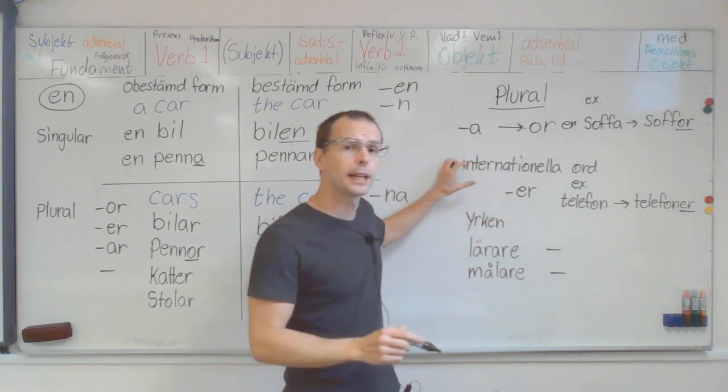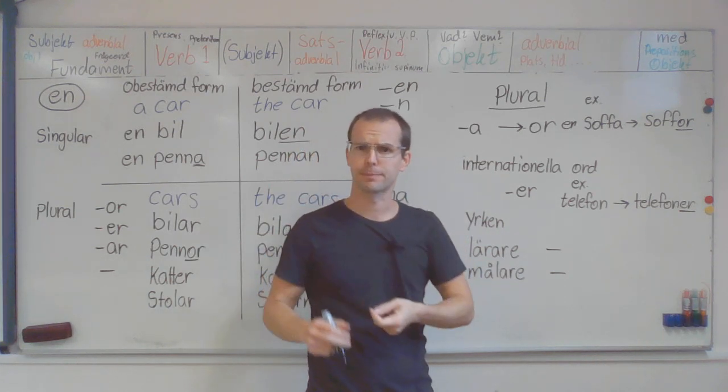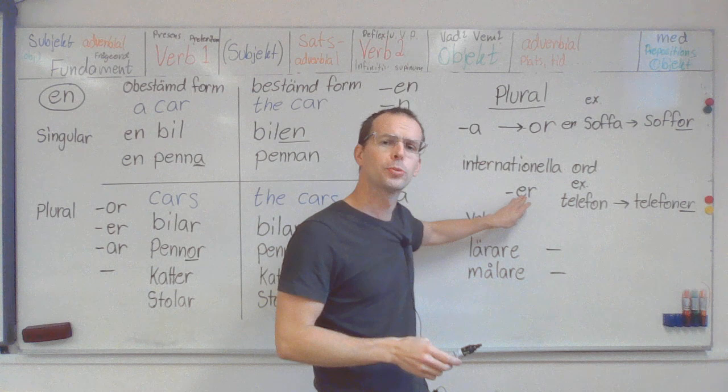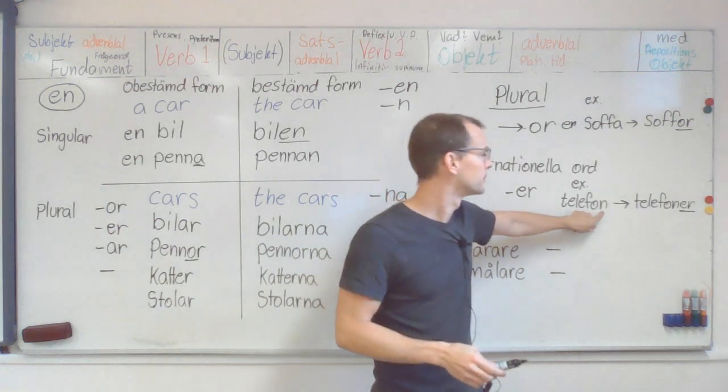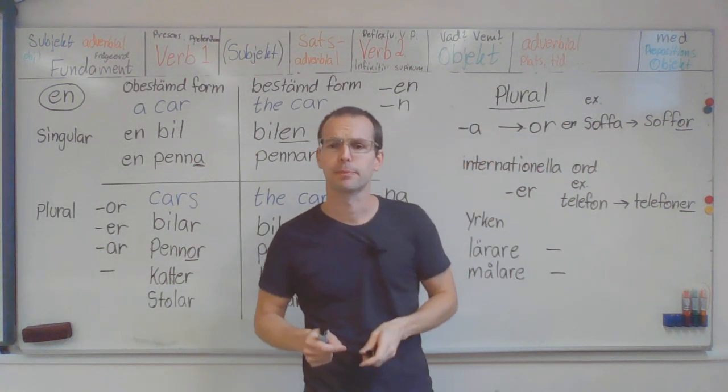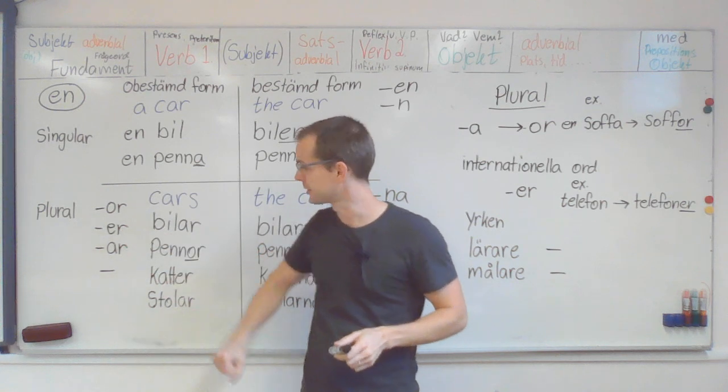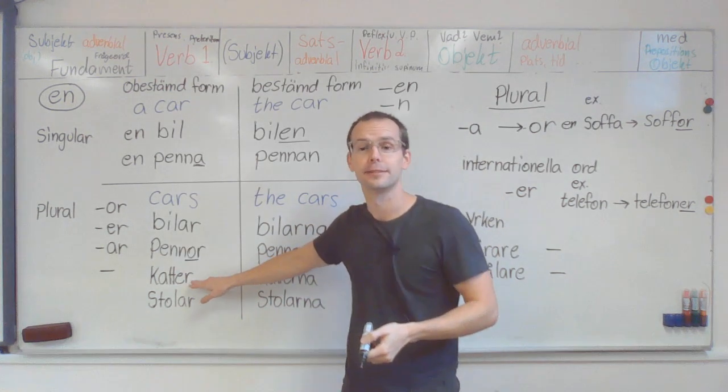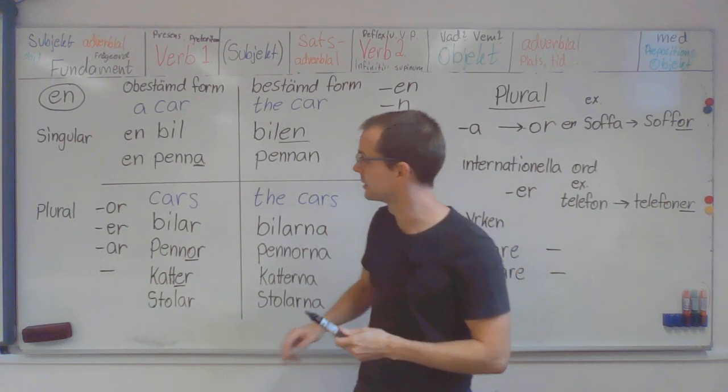Another rule we can look at, it's for what we call international words or loan words. Words from other languages. They almost always end with er in plural. For example, telephone. And plural, telefoner. Telefoner. So this one you can use. But there are of course also Swedish words that end with er. For example, cat, katt. And plural katter.